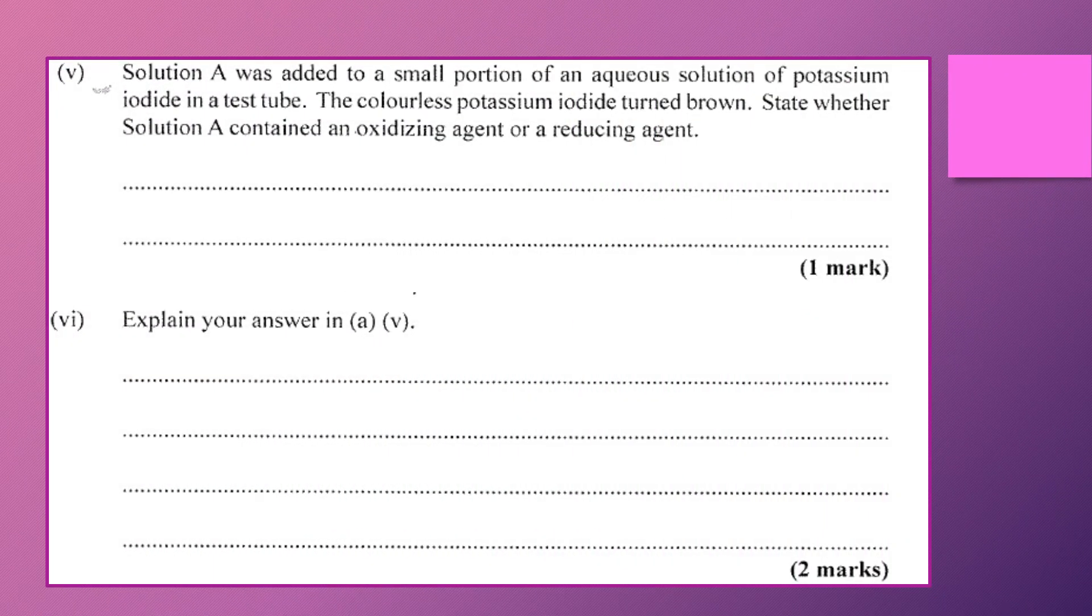So let us see what else is added here. The solution A, so that's a solution that we don't know of, was added to a portion of aqueous solution of potassium iodide in a test tube. And we noted that based on the question that the potassium iodide that was colorless turned to brown and were to determine whether solution A was acting as an oxidizing agent or as a reducing agent.